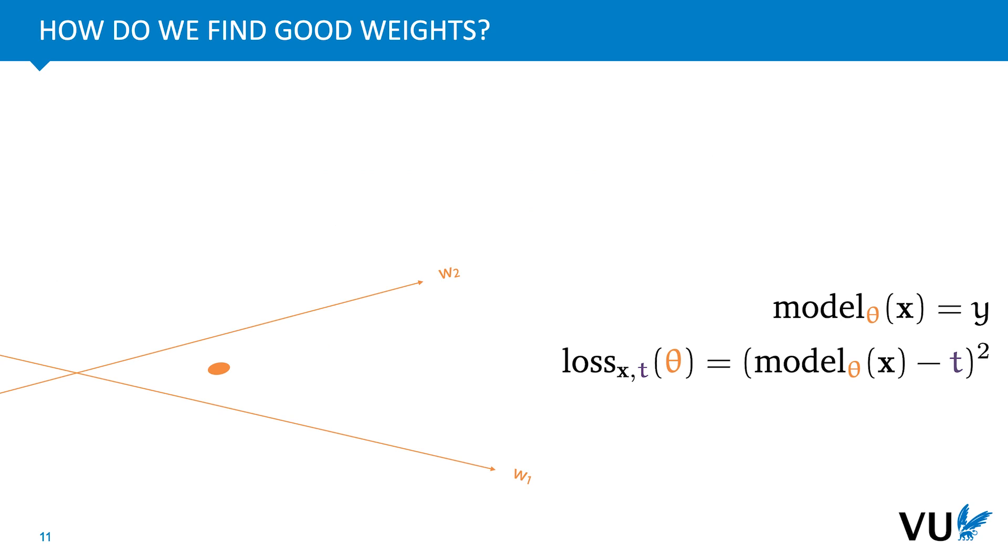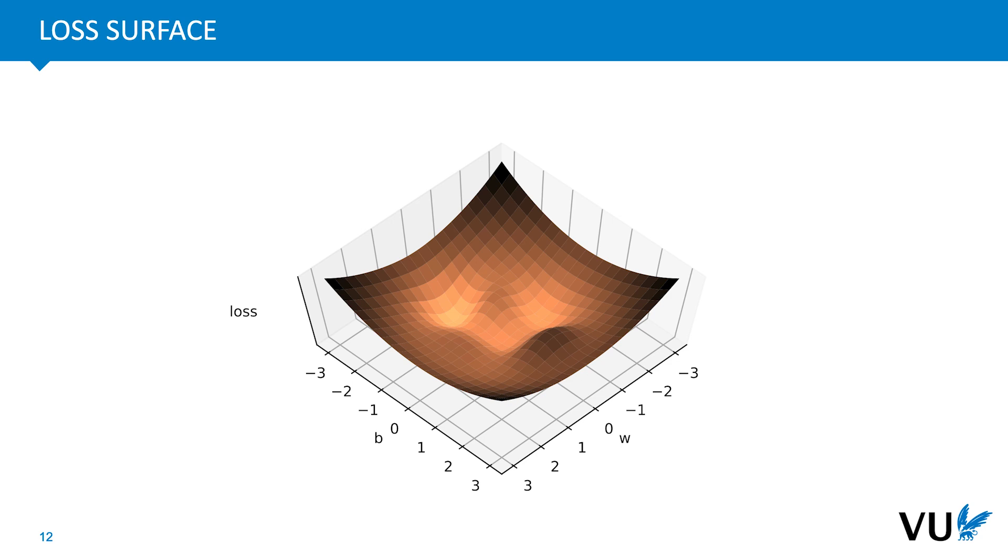With the loss function defined, we can start looking for weights, that is, model parameters, that result in a low loss over the data. The better our model, the lower the loss. If we imagine a model with just two weights, then the set of all models, which we call the model space, forms a plane. For every point in this plane, our loss function defines a loss. We can draw this above the plane as a surface, the loss surface, sometimes also called, more poetically, the loss landscape. Note here that the symbol theta is a common notation referring to the set of all weights of a model, sometimes combined into a vector or sometimes just a set. Here's what our loss surface might look like for a model with just two parameters.